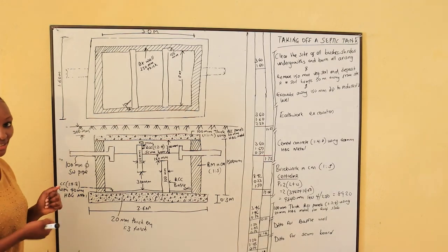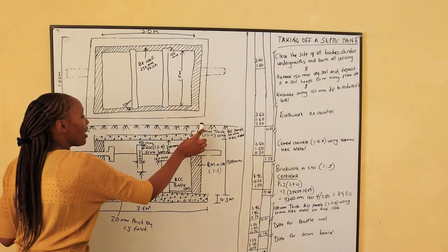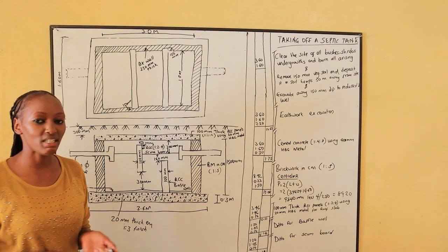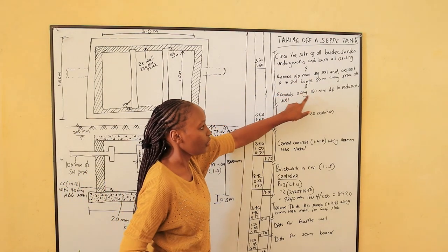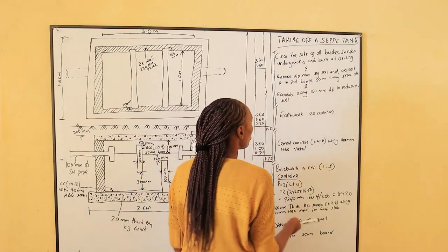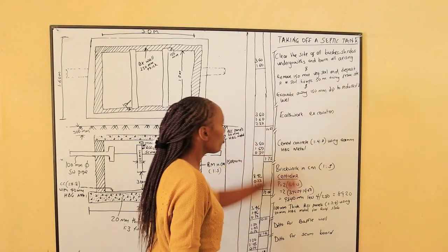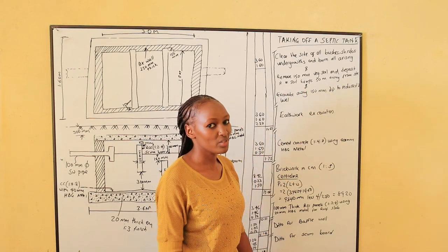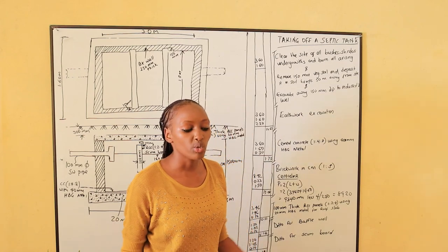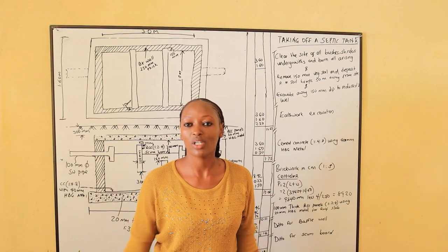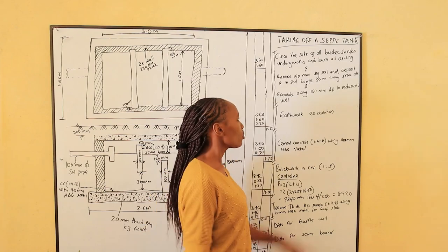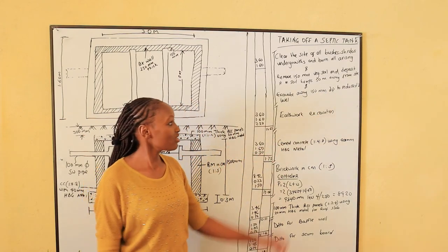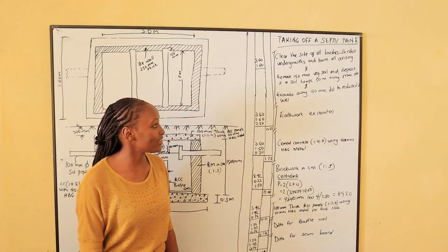The width shall be 1.6 meters. The depth from the excavation of the vegetable soil and the reduced level — we measure it in area and only state the depth in the description. The description shall be: clear the site of all bushes, shrubs, undergrowth, and burn arising. Then remove 150mm vegetable soil and deposit it in soil heaps 15 meters away from the site, because vegetable soil we will not use anymore — we cannot use it to backfill because it is bad soil with air spaces from vegetable material inside. Then excavate away 150mm deep to reduce the level, and put that soil in the cutaway heaps.